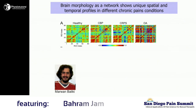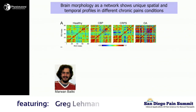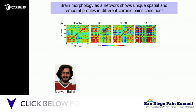Here is the same data in chronic pain patients — this is chronic back pain, CRPS, and osteoarthritis. And you don't need statistics to see that the self-similarity of the brain anatomy is dramatically different in different groups, and it's different in different ways across those groups.